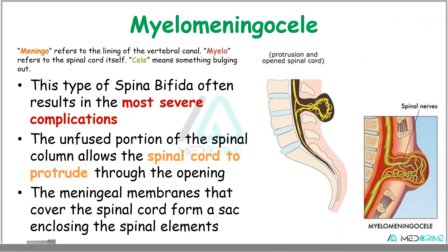Lastly, we have Myelomeningocele. Myelomeningocele is a type of Spina Bifida where the meninges and the spinal cord itself are bulging out — this is the type that results in the most severe complications. The unfused portion of the spinal column allows the spinal cord to protrude through the opening, and the meningeal membranes that cover the spinal cord form a sac enclosing the spinal elements.